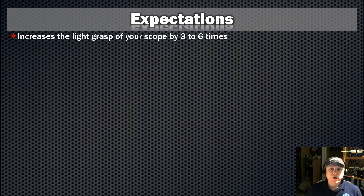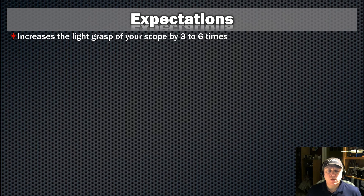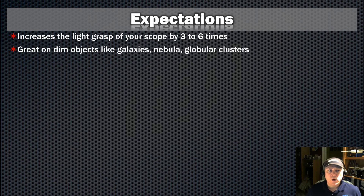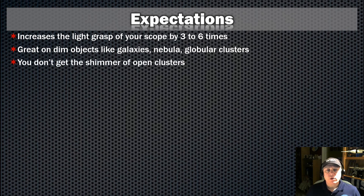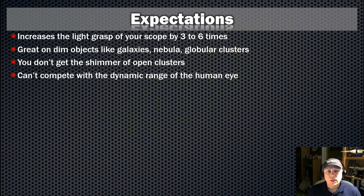When you're doing EAA, the light grasp of your scope will increase anywhere from three to six times compared to that of an equivalent visual telescope. EAA is great on very dim objects like galaxies, nebulae, and globular clusters. However, when you're looking at open clusters, you're not going to get that same beautiful shimmering effect that you would through an eyepiece. And EAA cannot compete with the dynamic range of the human eye.